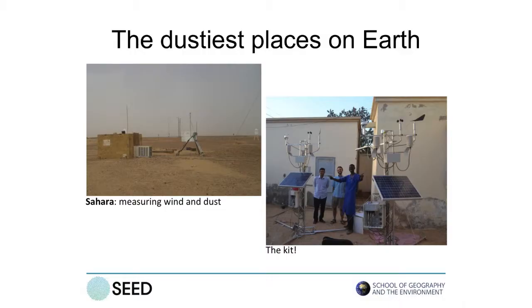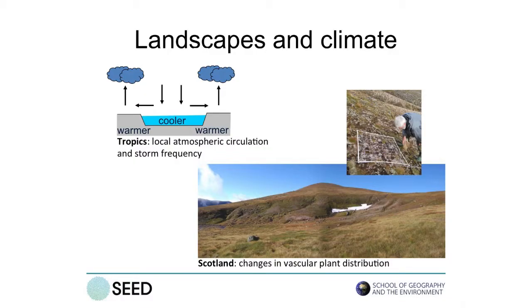You've already heard about the dustiest place on Earth, so I won't go into that in any more detail. Of course, dust isn't the only way in which landscapes interact with climate. We also study changes in albedo — the reflectivity of the surface — evaporation, distribution of plants, and also how plants respond to climate. So the whole sort of interaction.